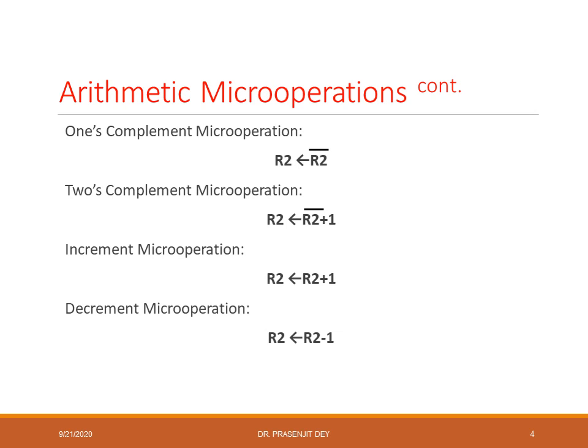Other arithmetic operations are also available. The 1's complement can be represented by putting a bar over R2. Similarly, you can represent 2's complement, increment, and decrement in register transfer language.